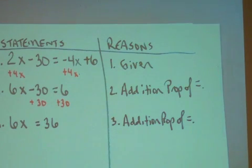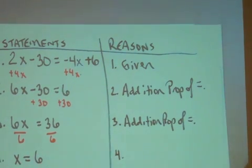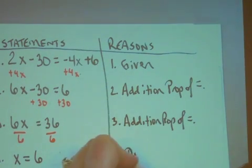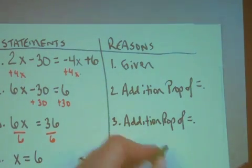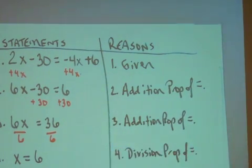The last thing we need to do, and again, this is the mental math, is we're dividing by 6. So my fourth statement is that x is equal to 6, and my reason is the division property of equality. And you have done your second two-column proof.